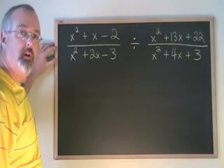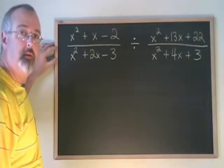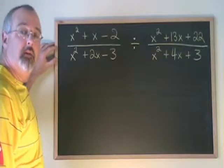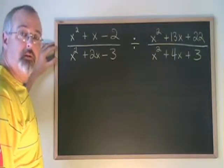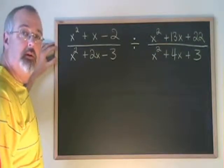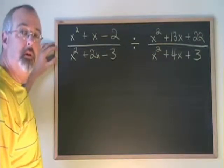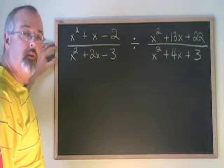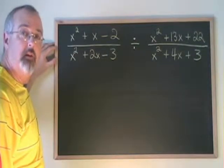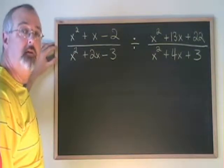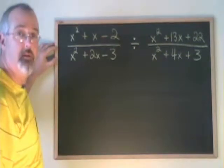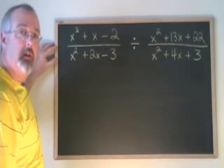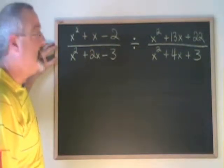When we divide algebraic fractions, it works the same way as when we divide regular fractions. You turn the second fraction upside down and you multiply instead. So if you already know how to divide regular fractions and you know how to multiply algebraic fractions, then you already know how to do this. But let's do a couple of examples.